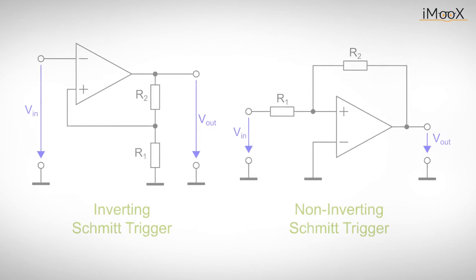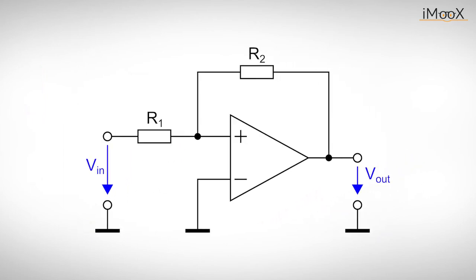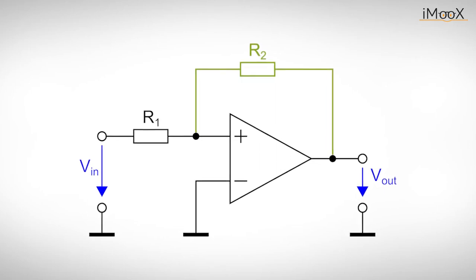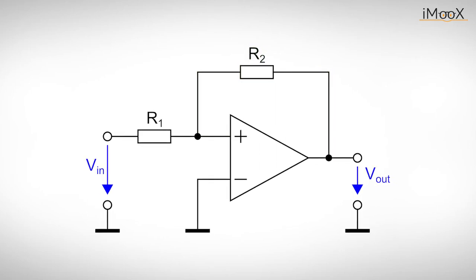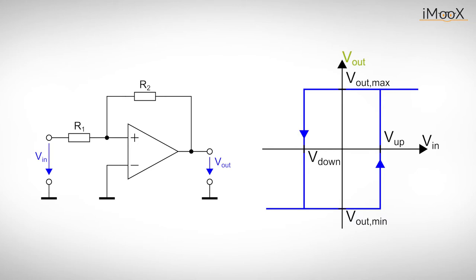Building a Schmitt trigger with operational amplifiers is quite easy. The circuits are disguisingly similar to the operational amplifier circuits of our previous videos, but this time the output voltage is fed into the non-inverting input. Let's focus on the non-inverting Schmitt trigger first. A very convenient way to describe the behavior of a Schmitt trigger is to plot the transfer function, which gives the output voltage as a function of the input voltage. For a non-inverting Schmitt trigger, the transfer function looks like this.